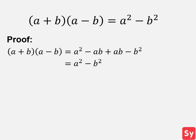Given two binomials multiplied together in this form, the product equals the difference of their squares. The proof of this identity can be found using the FOIL method.